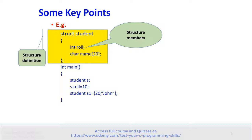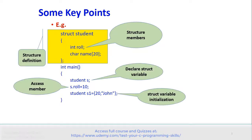The Structure definition is shown by a rectangle. Inside the Structure definition there are the Structure members. So the Student structure has two members: role and name. The instruction 'student s' declares one Structure variable. We can access a member of that Structure variable using the dot operator, for example s.role.